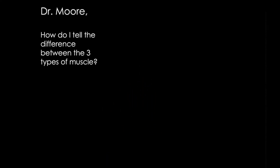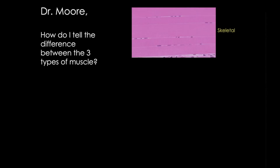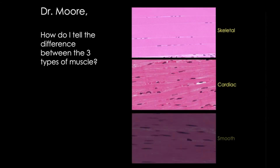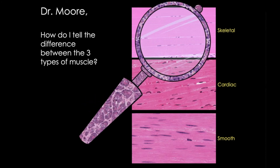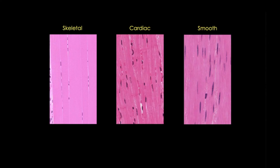The three types of muscle — skeletal, cardiac, and smooth — can be difficult to tell apart, so let's investigate. Now these three images may look pretty different here, but that's a deliberate choice on my part. The color may not always be helpful when you're trying to distinguish among these three types.